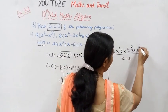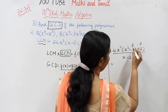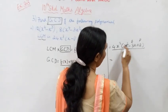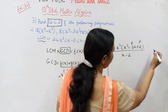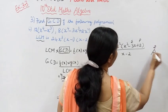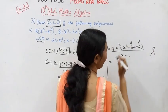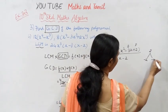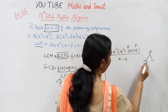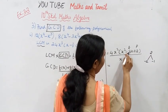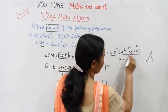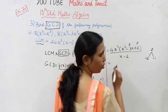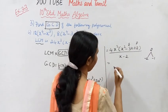Using sum and product: product is 1 into 2 equals 2, and sum is minus 3. So the factors are minus 2 and minus 1, since minus 2 plus minus 1 equals minus 3 and minus 2 times minus 1 equals plus 2. Therefore: 4x²(x minus 2)(x minus 1) divided by (x minus 2).